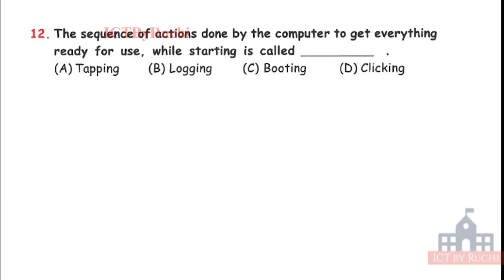Next question. The sequence of actions done by a computer to get everything ready for us while starting is called: Tapping, logging, booting or clicking. Tell me the answer. Answer is C. Booting. Tapping is like tab. Tapping is like, logging of some account from a computer, like a shutdown we have a logging. Clicking is done by mouse. So, booting is when we are sequence of action done by computer for starting a computer. Okay.